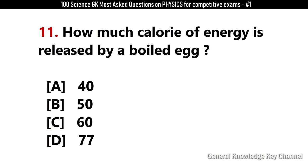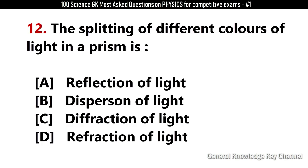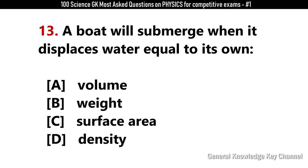How many calories of energy are released by a boiled egg? Answer D: 77. The splitting of different colors of light in a prism is? Answer B: Dispersion of light. A boat will submerge when it displaces water equal to its own? Answer B: Weight.